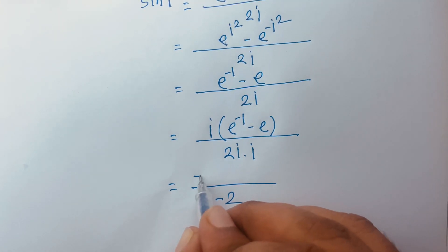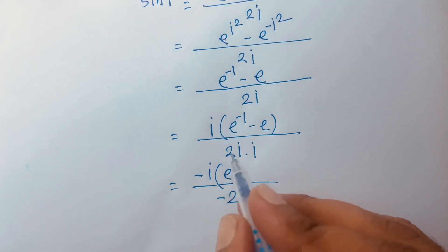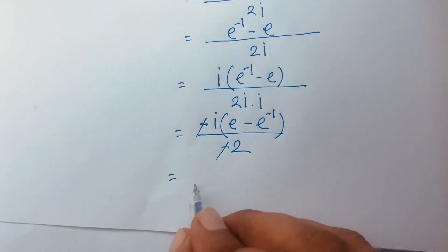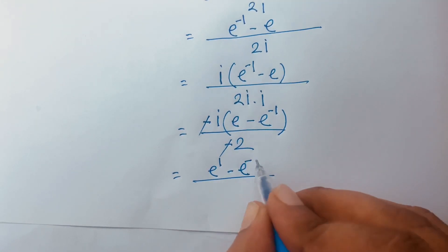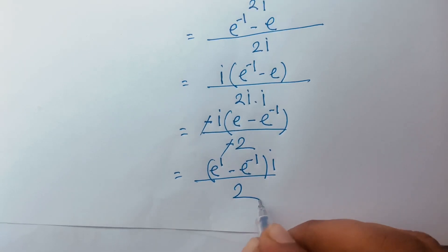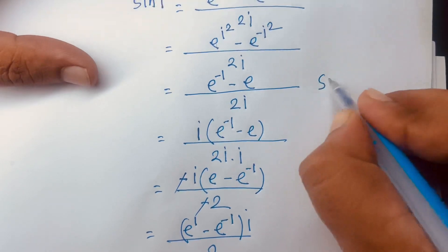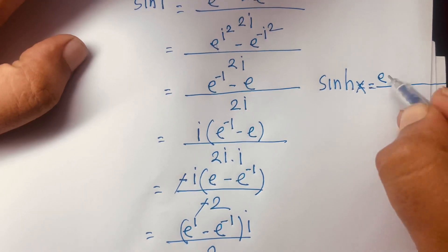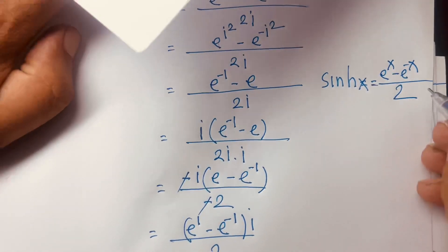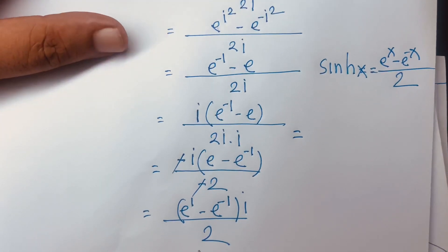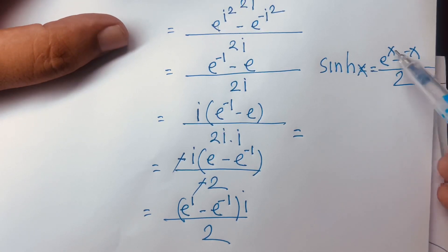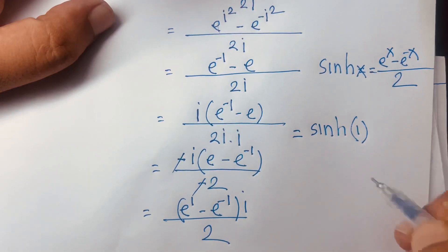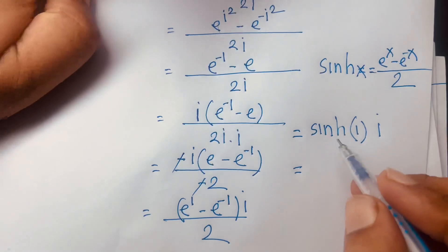Taking minus 1 as common and simplifying, we find e to the power 1 minus e to the power minus 1, over 2, times i. Now we know the hyperbolic sine formula: sinh(x) equals e to the power x minus e to the power minus x, over 2. Comparing, we can see this is sinh(x) with x equal to 1, so this equals sinh(1) times i.